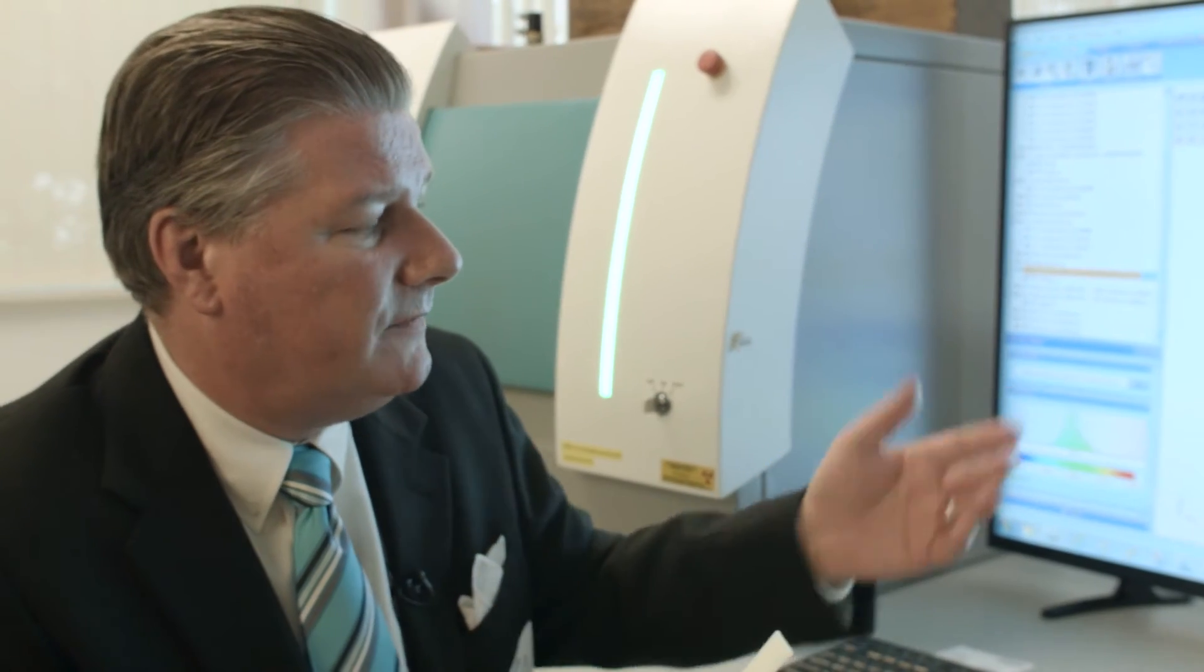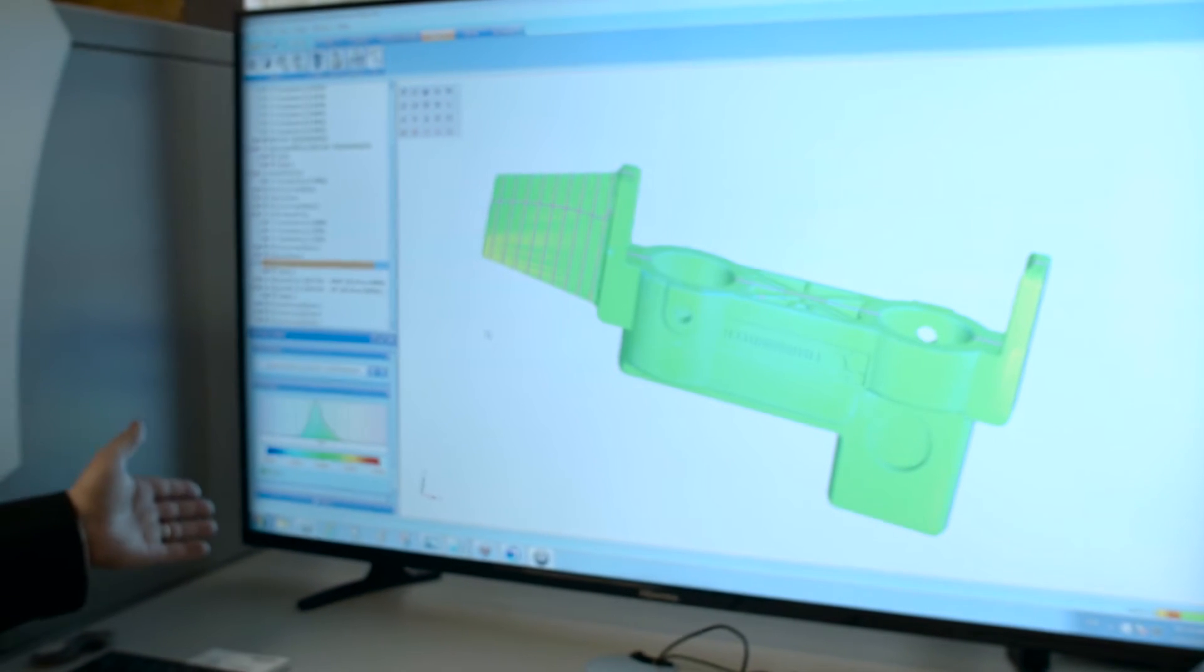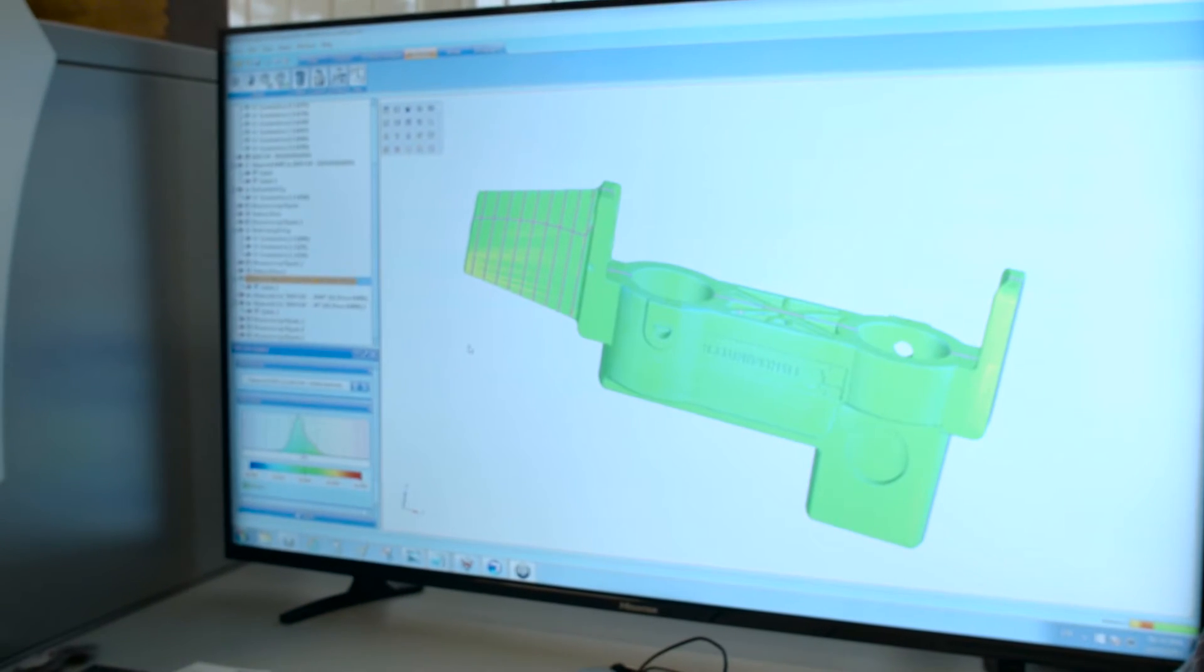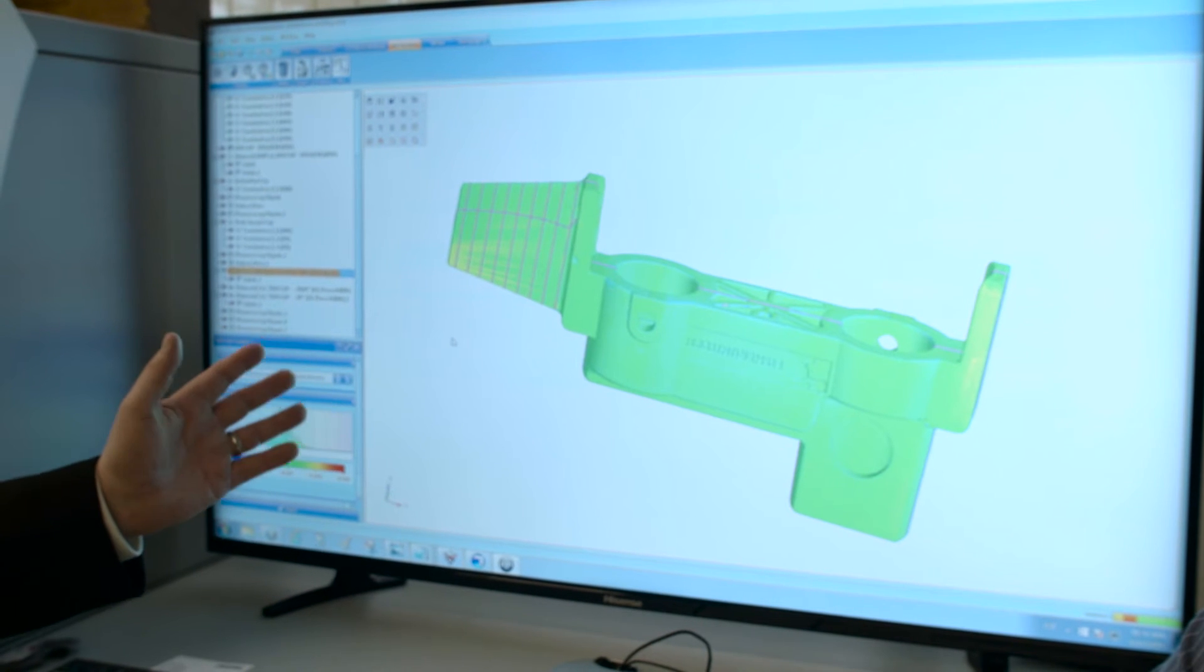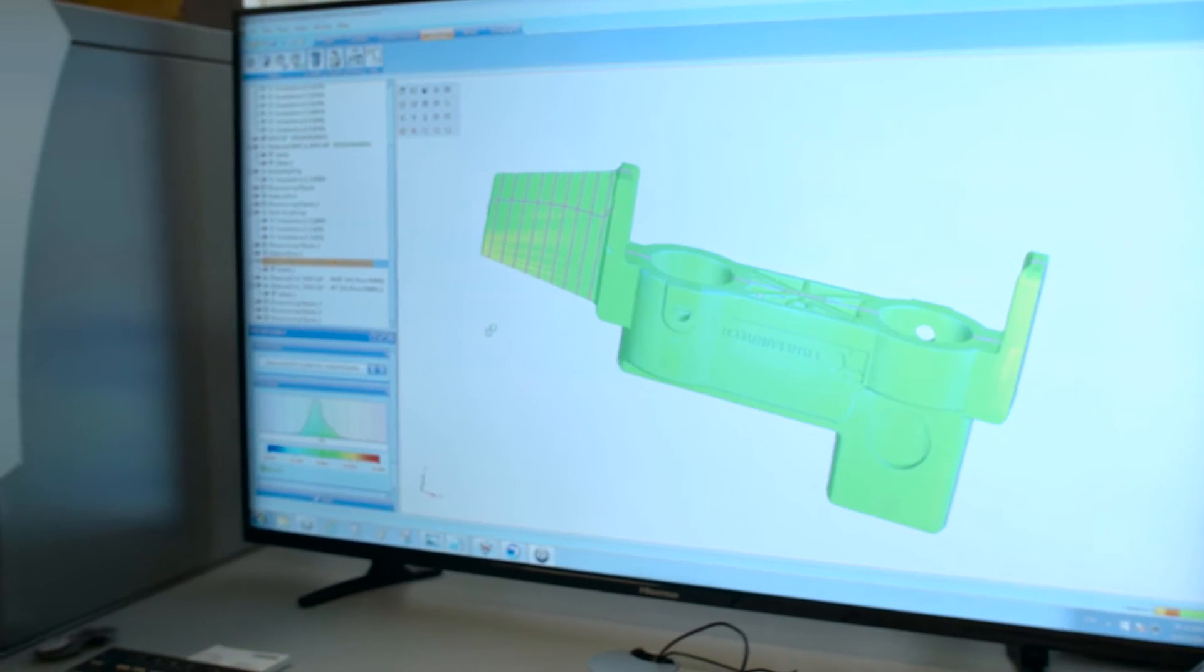Here we have a color map that shows green if the part is good, and if it's starting to go blue or yellow, that's where it's going away from nominal.